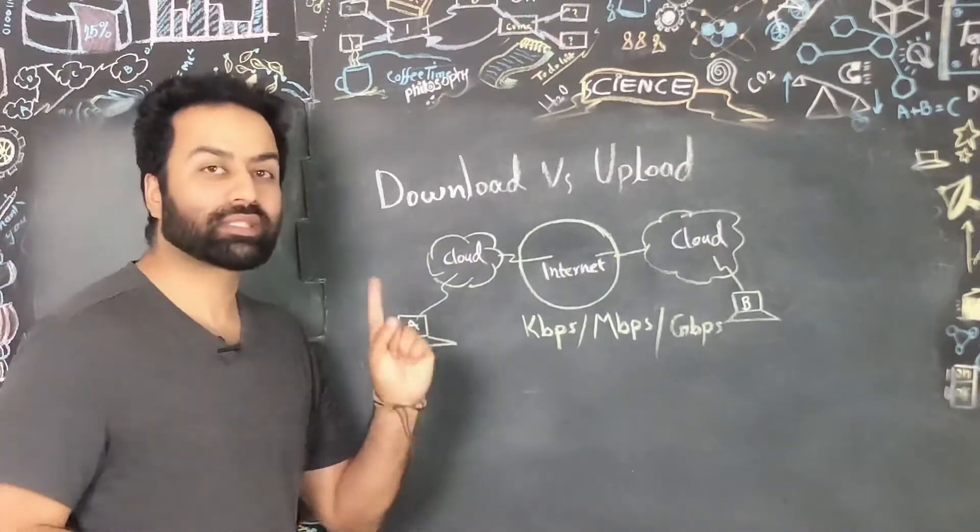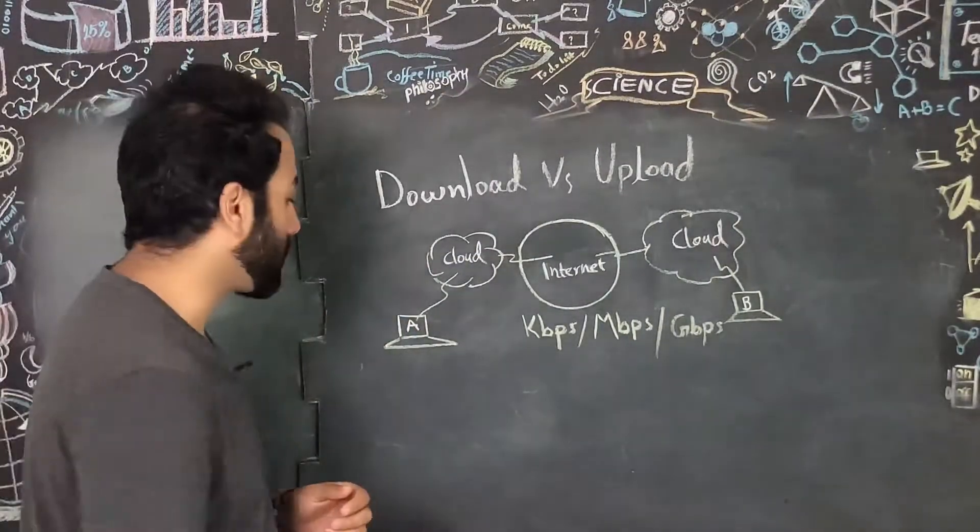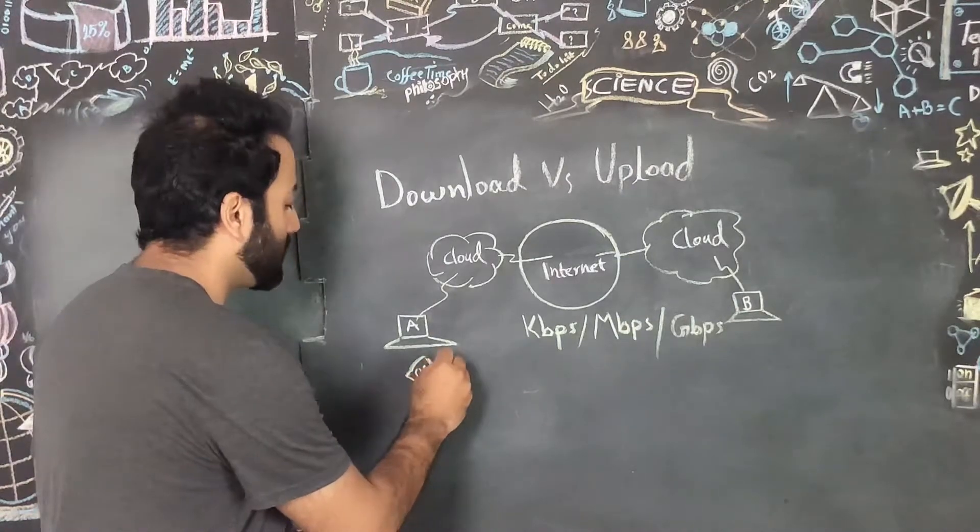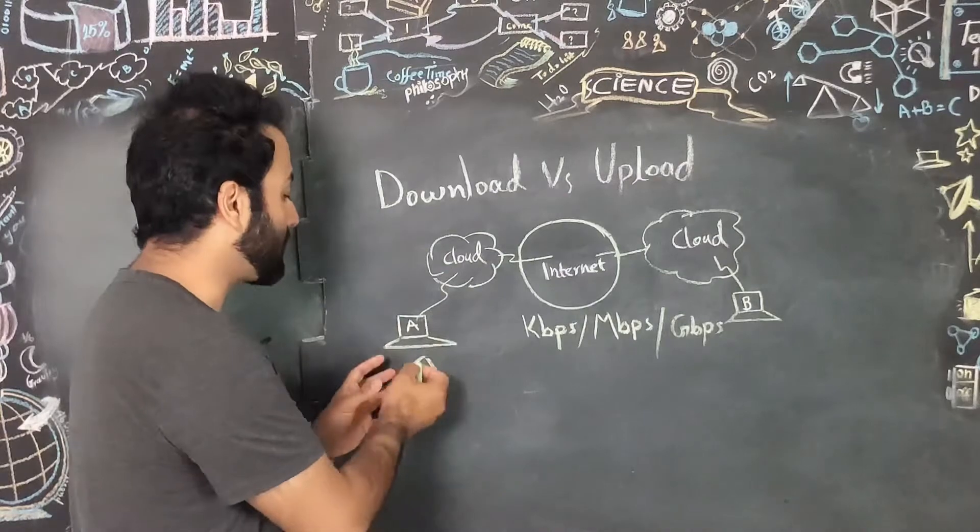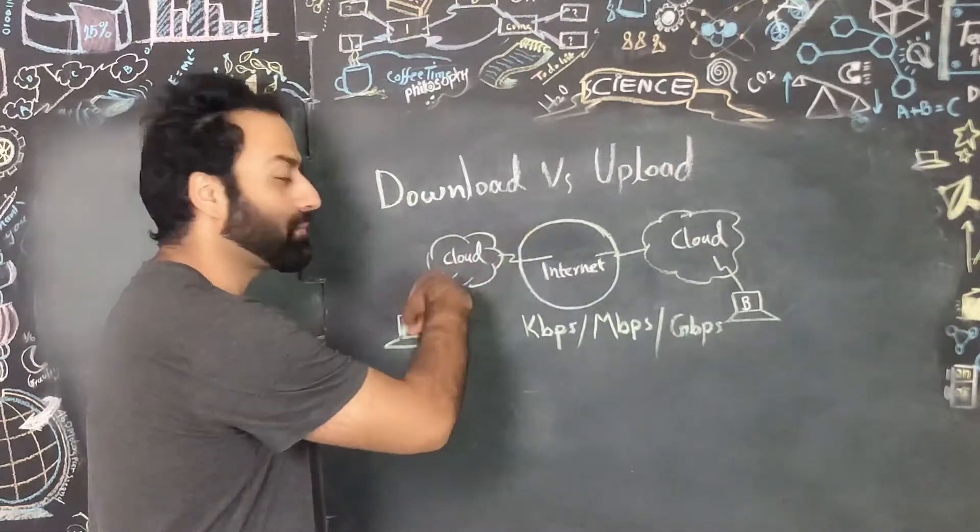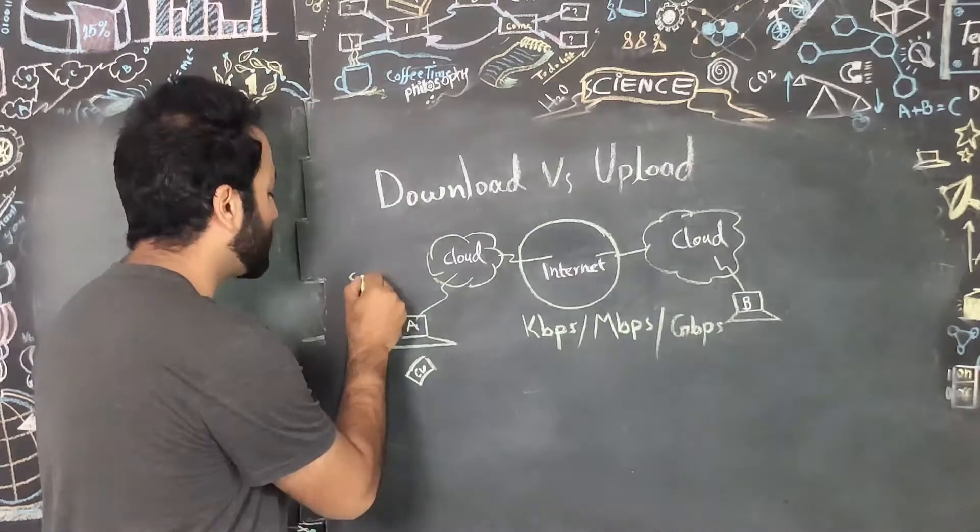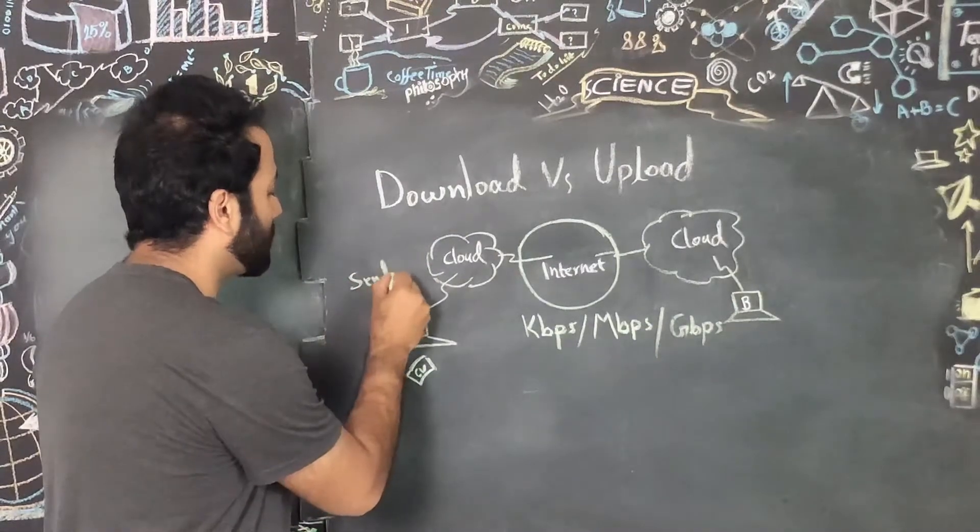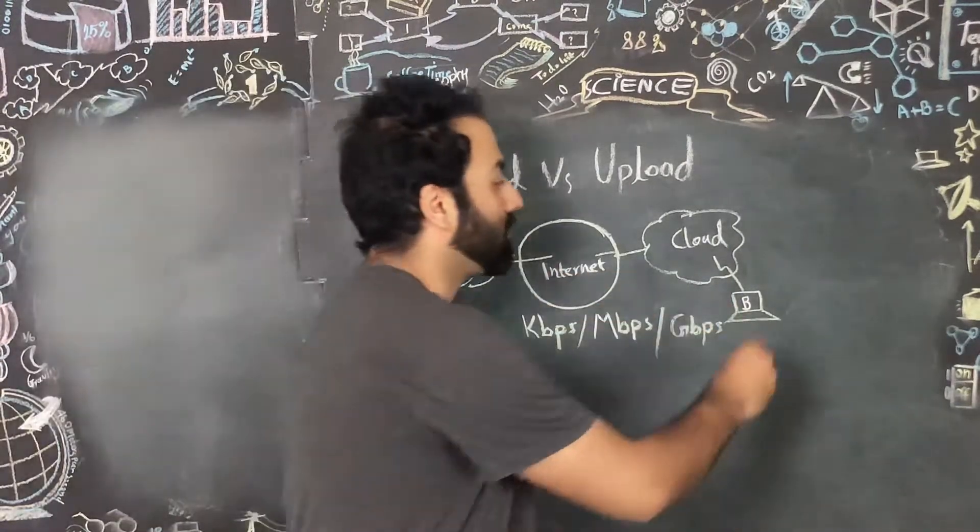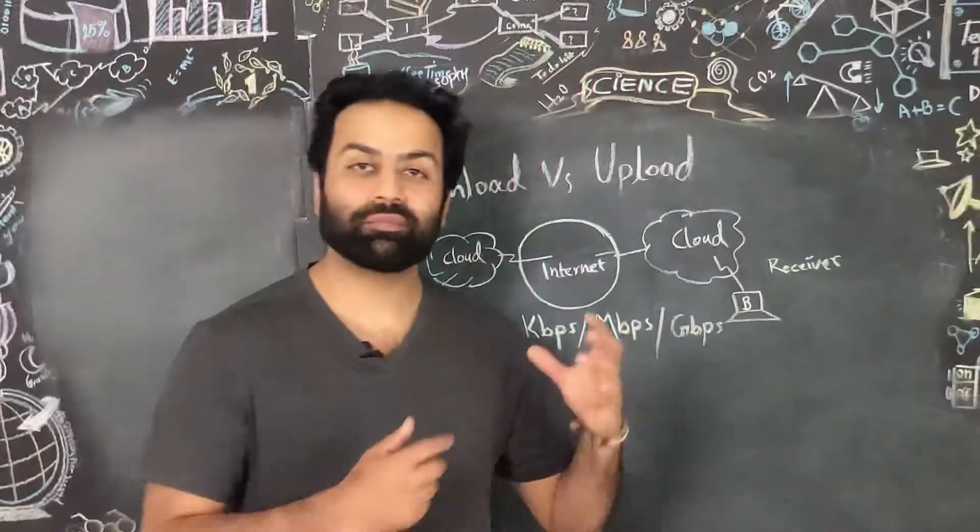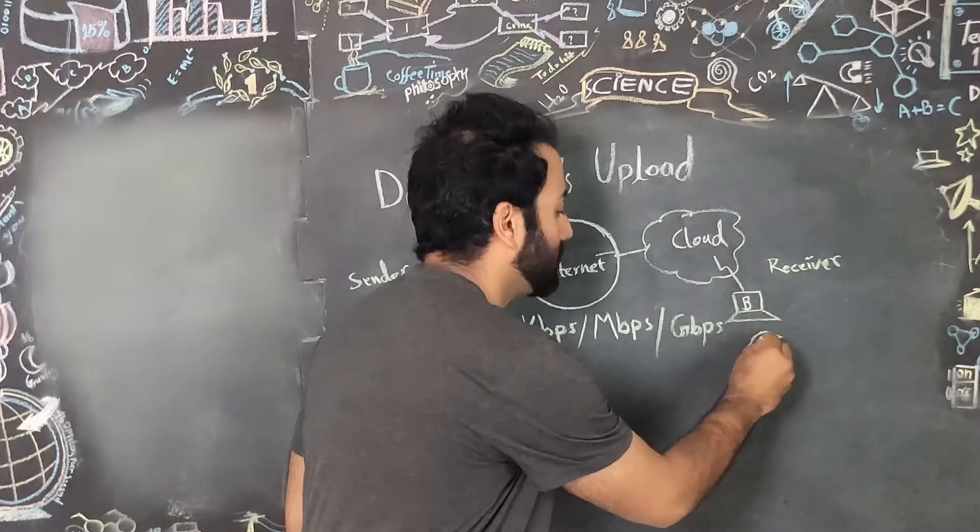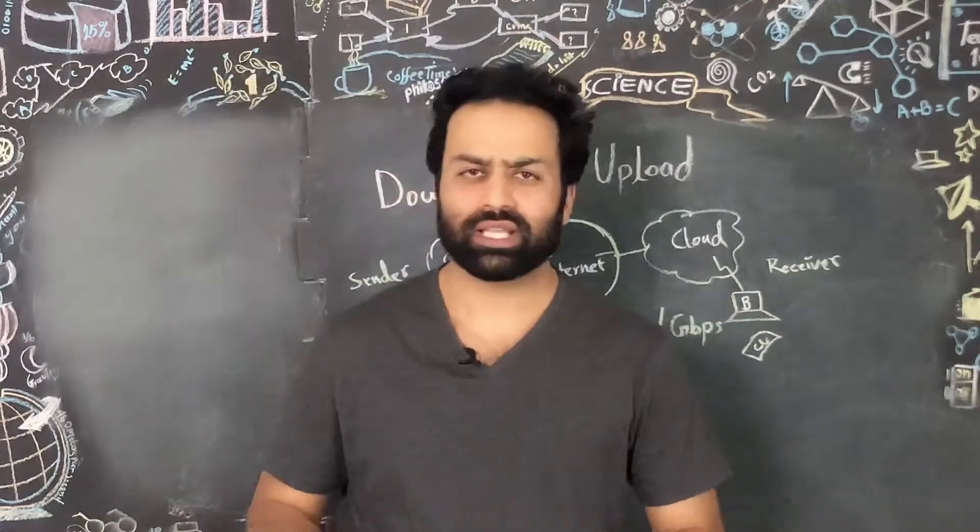Overall, for example, computer A wants to send a resume or CV to computer B. The moment that computer A attaches the CV to his email and sends it to computer B, this is called uploading. When computer B is the receiver, once computer B receives the resume or CV, this process is called download. This is the main concept of what is uploading and downloading.